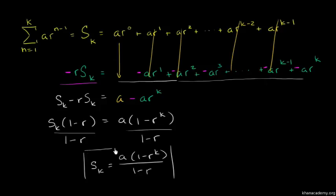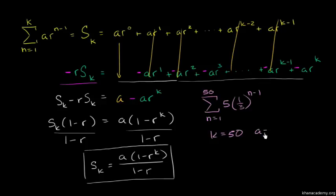Let's do an example. The summation from n equals 1 to 50 of 5 times 1 over 3 to the power n minus 1. Here k equals 50, a equals 5, and the common ratio r is 1 over 3.